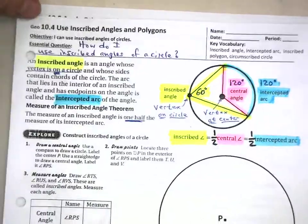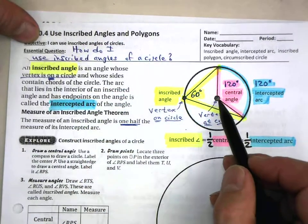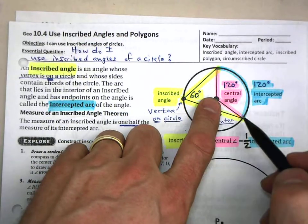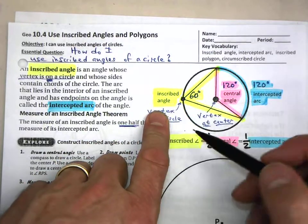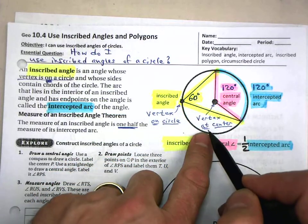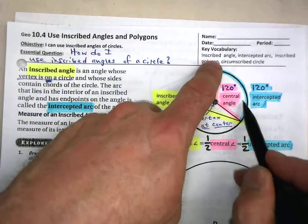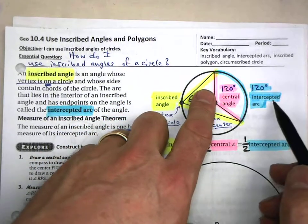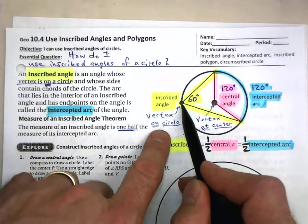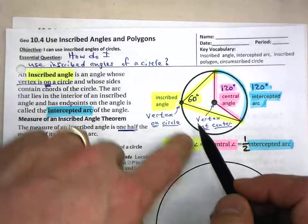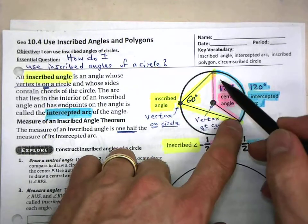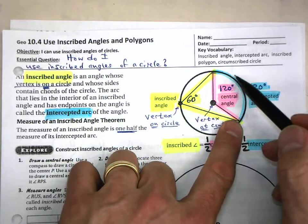Why are they talking about 'other'? We have already looked at 10.4 and examined central angles and inscribed angles and the intercepted arcs those create. With a central angle, whose vertex is at the center, the measure of that angle equals the measure of its intercepted arc. Whereas the measure of the inscribed angle, whose vertex is on the circle, is one half of its intercepted arc, or one half of the central angle that creates the same intercepted arc.